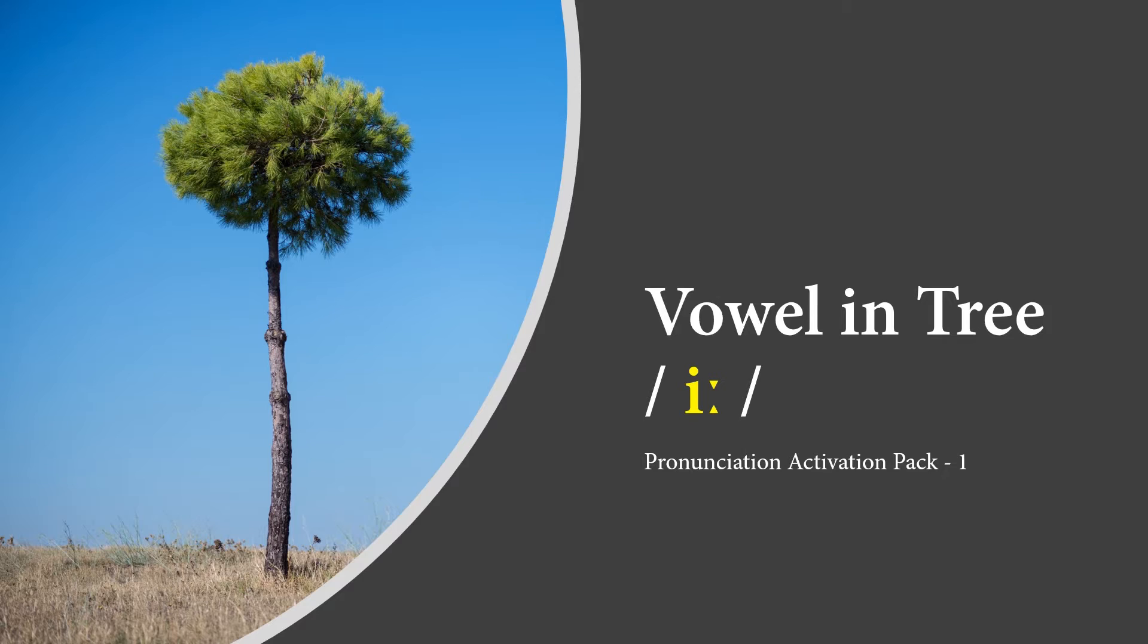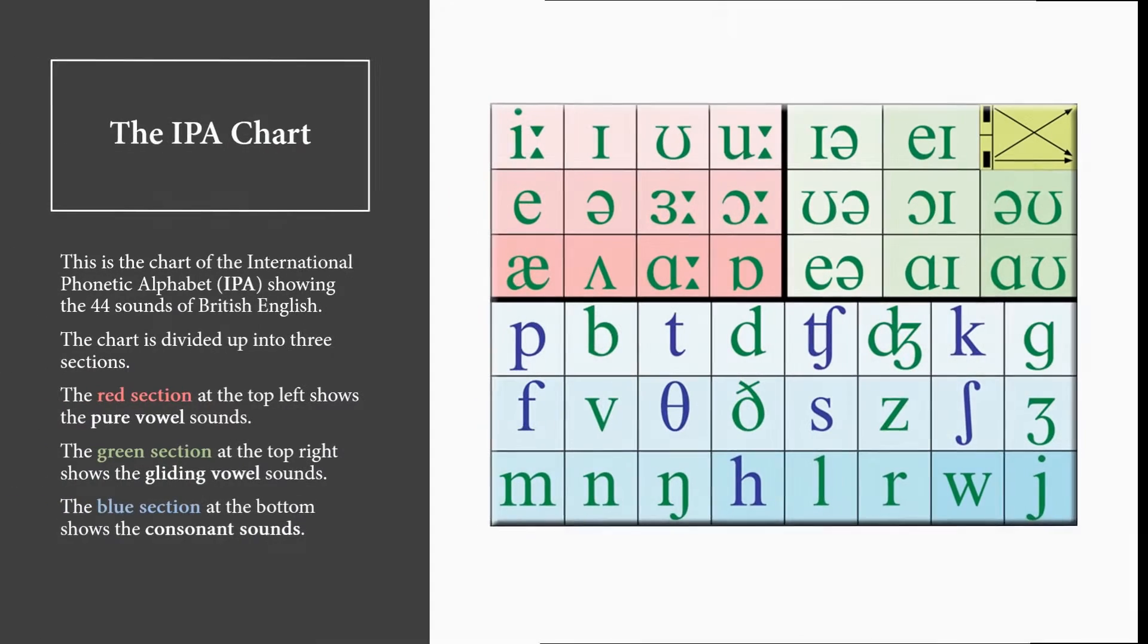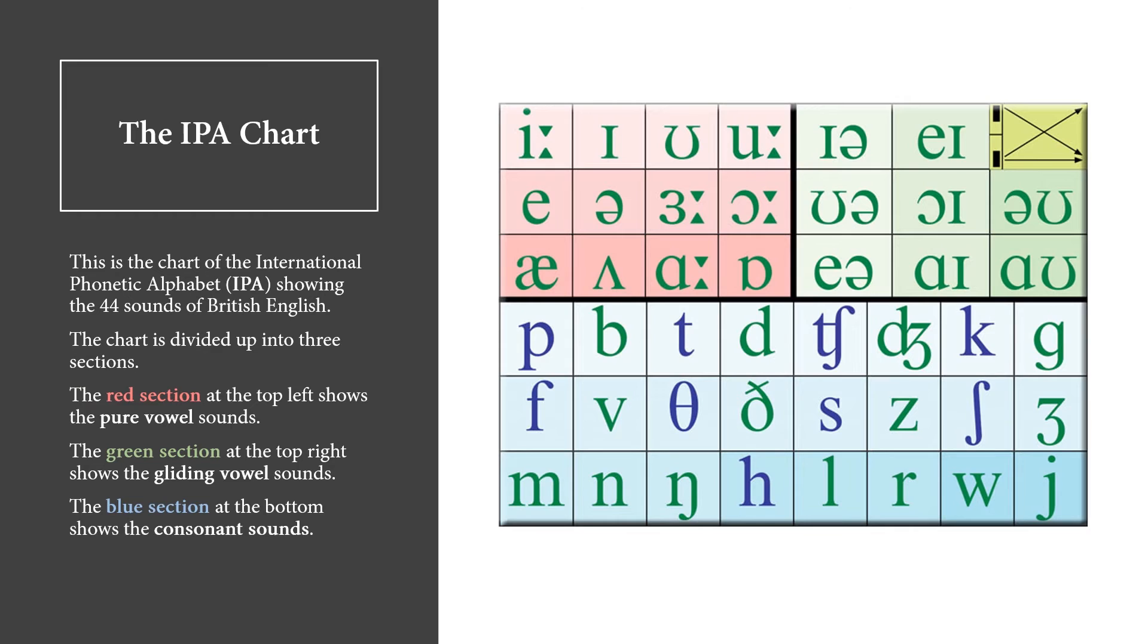Vowel in Tree E Pronunciation Activation Pack 1. This is the chart of the International Phonetic Alphabet, IPA, showing the 44 sounds of British English.